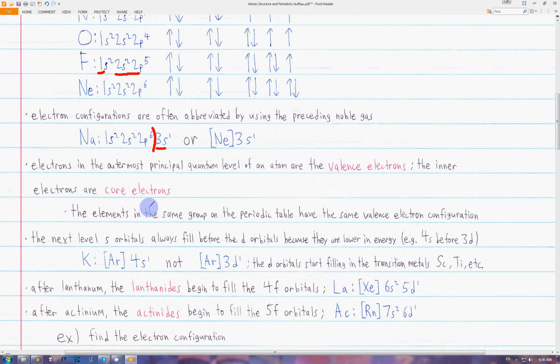We have a couple rules for writing electron configurations when we get further down the periodic table. The next level s orbitals will always fill before the d orbitals, because they are actually lower in energy. For example, 4s will be filled before 3d, 6s will fill before 5d, and so on.